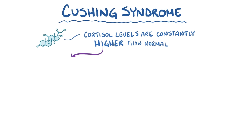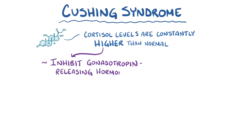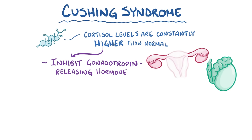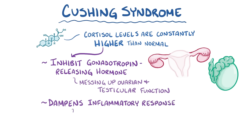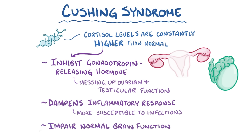High levels of cortisol also inhibit the secretion of gonadotropin-releasing hormone from the hypothalamus, which messes up normal ovarian and testicular function. Excess cortisol also dampens the inflammatory and immune response, making individuals more susceptible to infections. Finally, high levels of cortisol seem to impair normal brain function, though the exact mechanism is unclear.